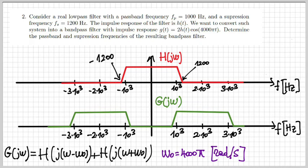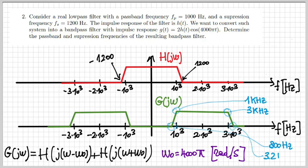Where omega 0 is 2000 hertz. Omega 0 is 4000 pi in radians per second. But in hertz, I have to divide by two pi. So it's exactly 2000 hertz. So let's now answer the question that the exercise asks to determine the passband and suppression frequencies of this resulting bandpass filter g of j omega. As you can see from the plot, the passband frequencies are between one and three kilohertz, and the suppression frequencies are at 800 hertz and 3.2 kilohertz. You can see this by symmetry.